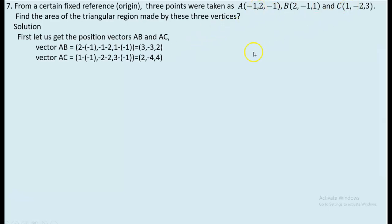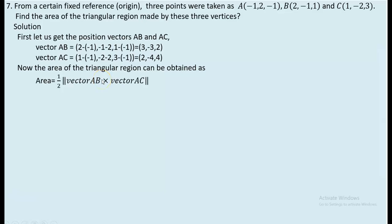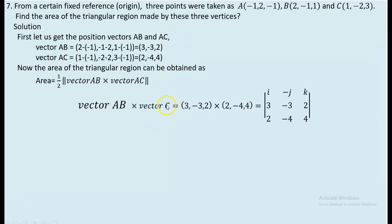We now determine the cross product of vectors AB and AC. The area of a triangle is half the norm of AB cross AC — because the cross product gives the area of the parallelogram (rectangular region), and the triangle is half of that. So the area of the triangle is (1/2)||AB × AC||. With AB = (3, -3, 2) and AC = (2, -4, 4), we set up the cross product matrix.